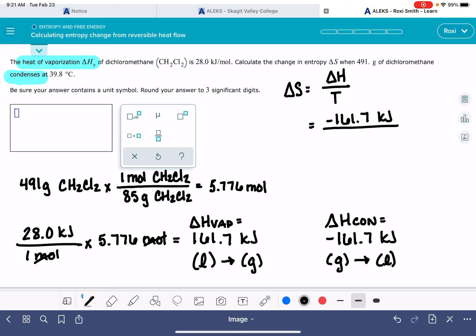We're going to divide this by the temperature in Kelvin. So we've got 39.8 degrees Celsius, and we're going to add 273.15 to turn that into Kelvin. 39.8 plus 273.15 gives us a temperature of 312.95 Kelvin.